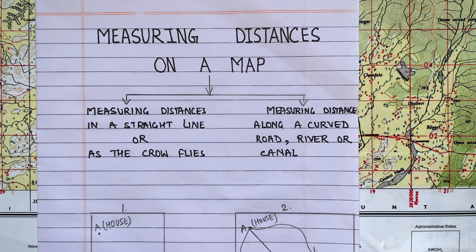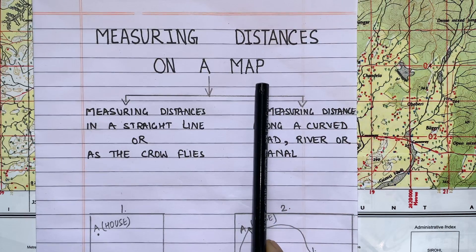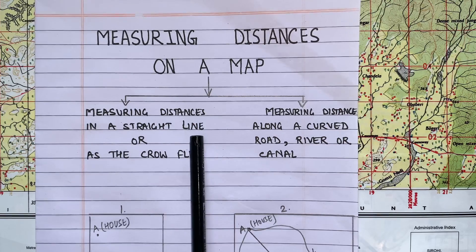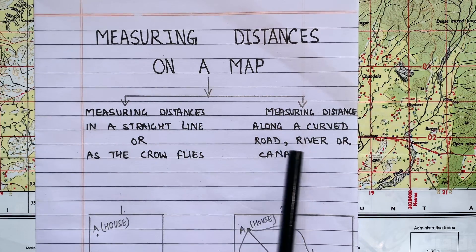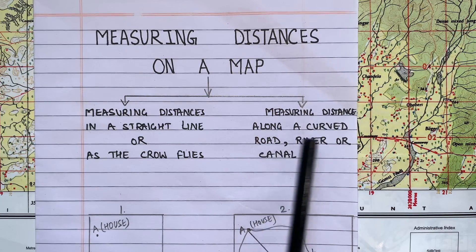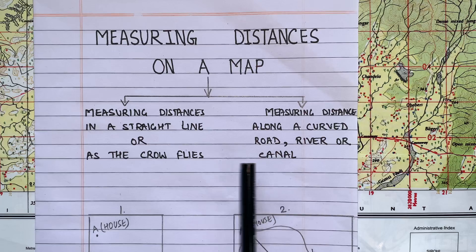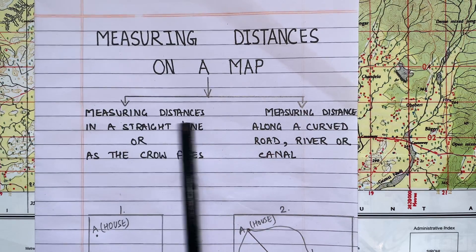Hello all, my today's topic is measuring distances on a map. We have to do this from two processes. One is in a straight line measurement or as the crow flies. Another one is measuring distance along a curved road, river, or canal.